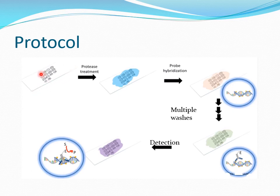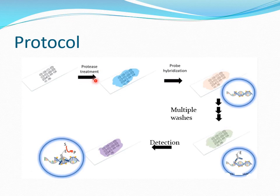First, we fix the tissue using formaldehyde. This fixed tissue is then embedded in paraffin and sectioned. After that, in order to remove interfering molecules like proteins, the samples are treated with different protease enzymes, very mild detergents, or very dilute hydrochloric acid as a pretreatment.